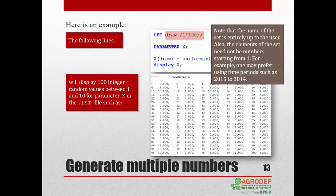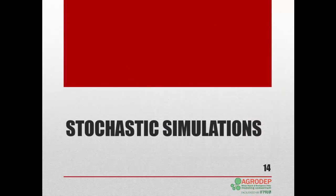First, we define a set we call draw with 100 elements. Next, we define the parameter X on the set draw. Using the distribution function UniformInt, we generate 100 random integer values between 1 and 10 that we assign to X. Note that the name of the set is entirely up to the user. Also, the elements of the set do not have to start from 1. They could as well represent, for example, time periods such as 2015 through 2114.